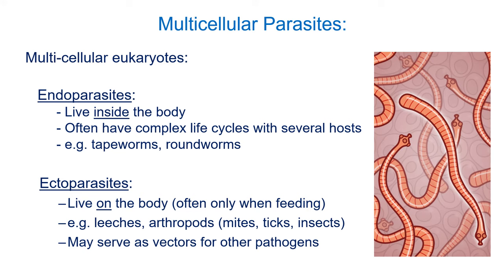Parasites that live in our bodies are known as endoparasites — endo meaning inside. They often have a very complex life cycle that involves several different hosts. Ectoparasites live on the body; ecto means outside, and quite often they're only found there when they're actually feeding. Things like leeches would be ectoparasites, and a number of arthropods — mites, ticks, and insects like mosquitoes and lice. These can also serve as important vectors for other pathogens; ticks, for instance, will transmit the bacterium that causes Lyme disease.